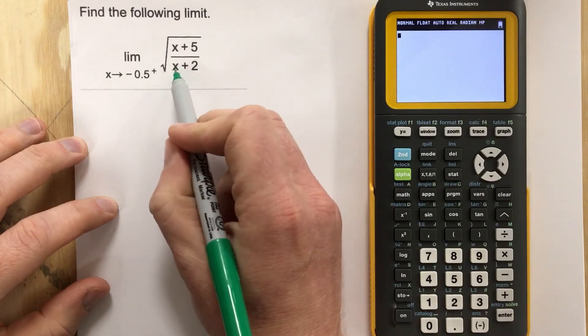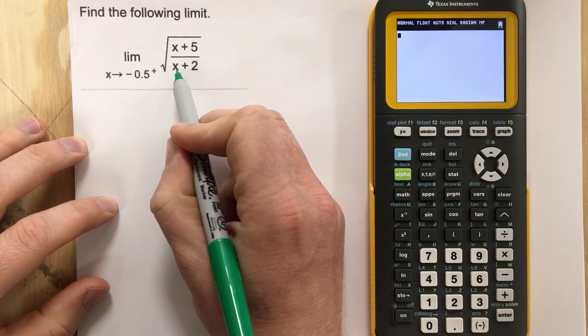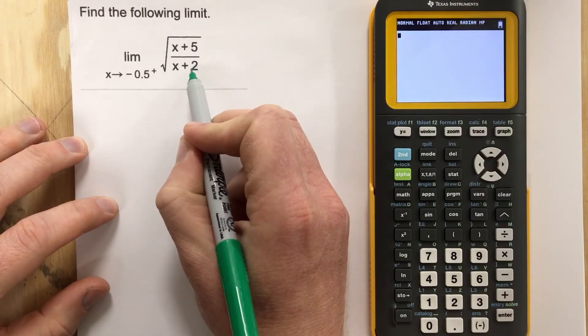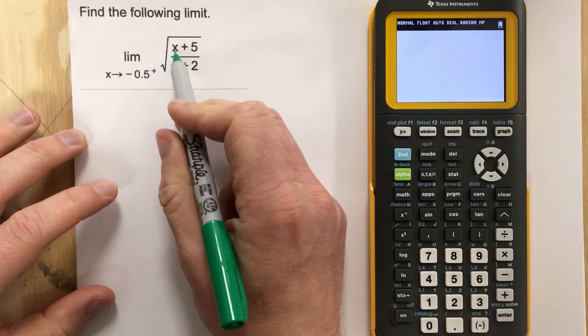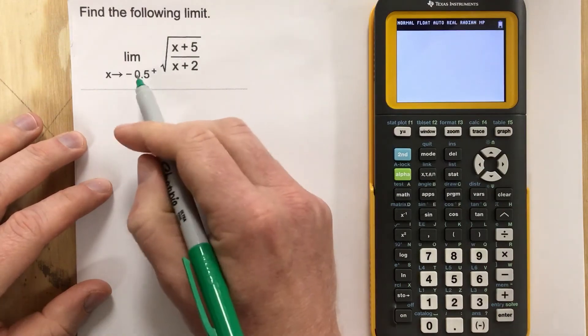If we plug in negative 0.5, you can see that negative 0.5 plus 2 is not going to give you 0. And negative 0.5 plus 5, we're going to get some number on both top and bottom. So it is defined here.